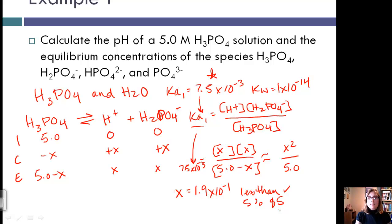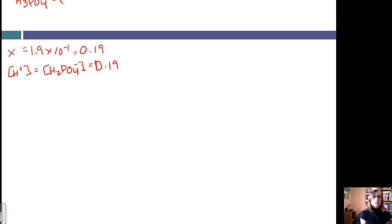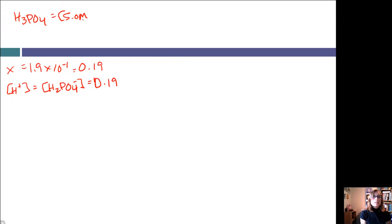So now let's figure out all these equilibrium concentrations. We know that our X is equal to 1.9 times 10 to the negative 1, or 0.19. This is equal to our H+ concentration, and this is also equal to our H2PO4- concentration. H3PO4 is equal to 5.